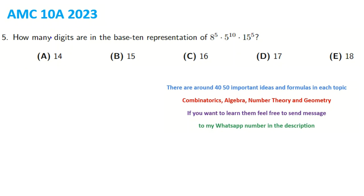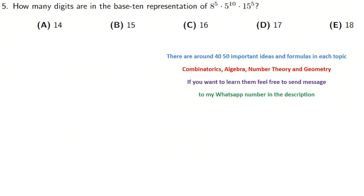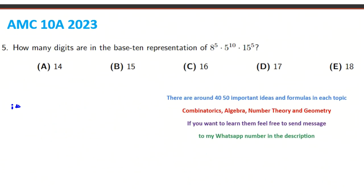In AMC 10A 2023, how many digits are in the base-10 representation of 8 to the 5 times 5 to the 10 times 15 to the 5? The idea here that we want to use is idea 3 and idea 4. The only thing you should pay attention to is that 2 times 5 will be 10.